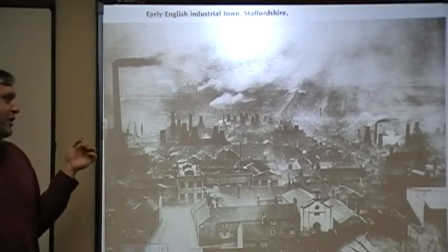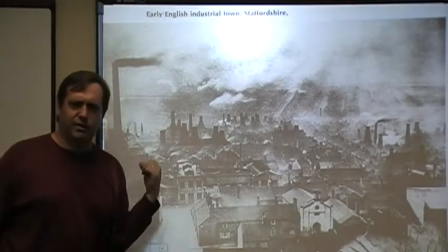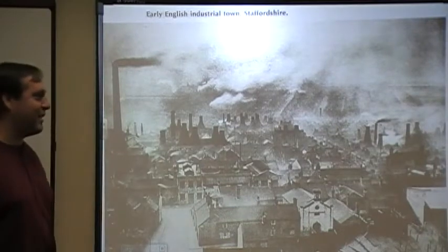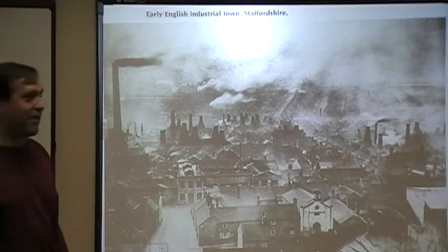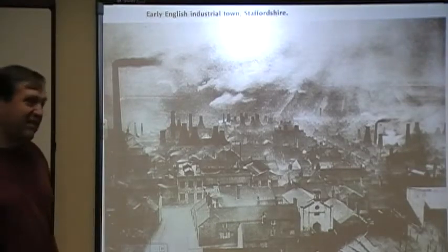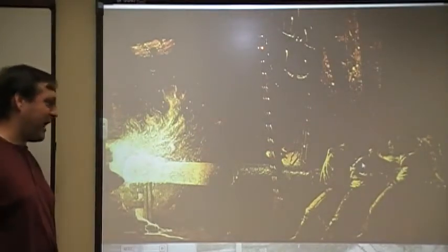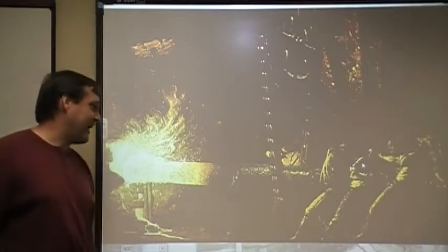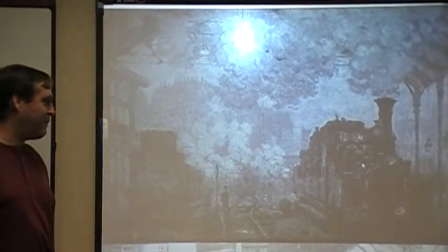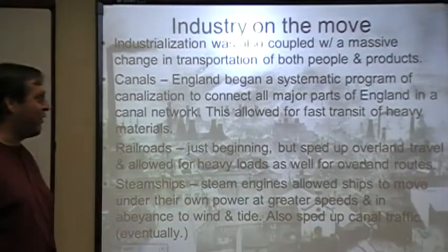This is Staffordshire, an early English industrial town. You can see how hazy, smoky, and coal-covered it is — one of the archetypes of 19th century England. Workers operate blast furnaces, strengthening iron by using coal blast furnaces to remove impurities. This is the train yard — it's kind of depressing, sad because of all the coal smoke.